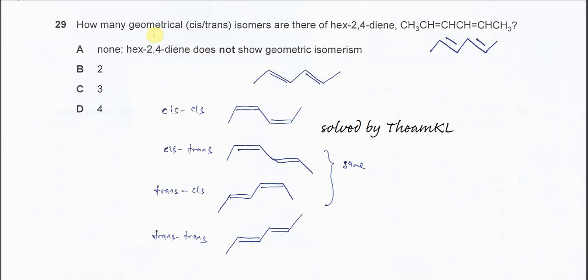For the geometrical isomers, we know that because it has two double bonds, the arrangement that it could be is actually the combination. So it's cis-cis, or cis-trans, or trans-cis, or trans-trans.